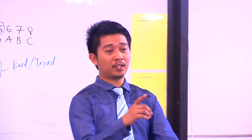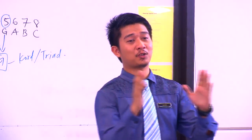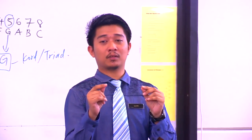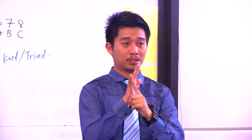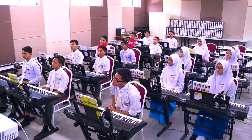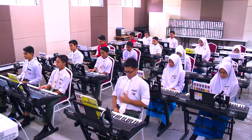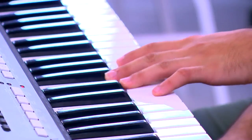Tadi yang anda buat adalah cord C major. Kita ada banyak lagi cord yang telah kita pelajari. Tapi kita dah faham konsep untuk membentuk cord - satu, tiga, lima. Jadi kita pergi lebih cepat untuk cord yang kedua. Cord yang kedua adalah D minor. Sila letakkan D, F dan A pada keyboard. Kita akan bunyikan cord D minor.